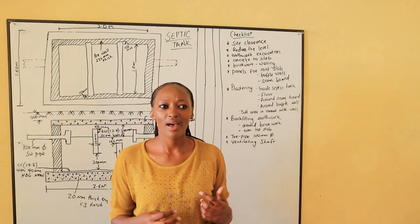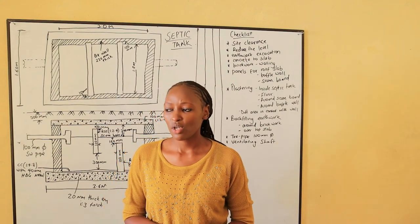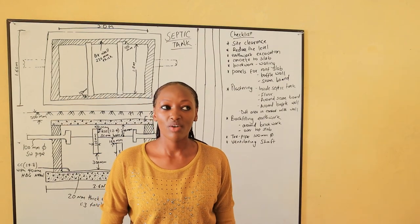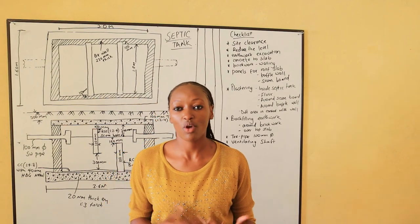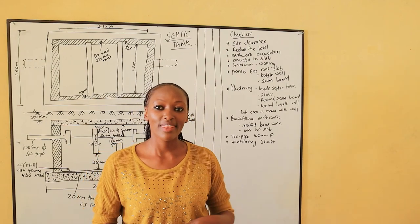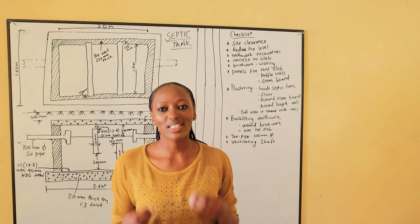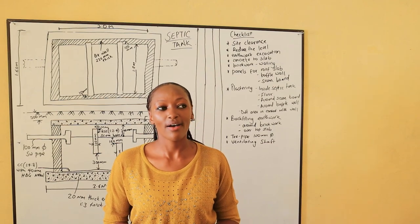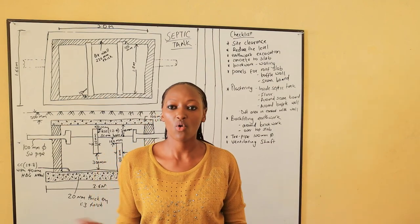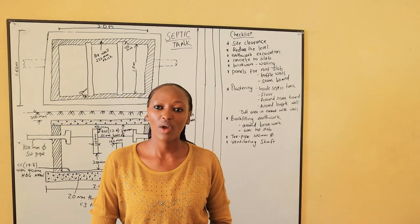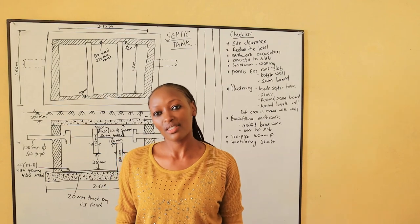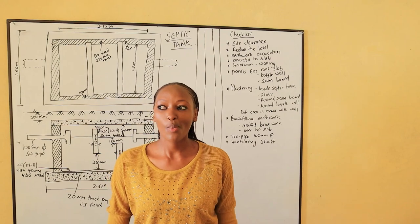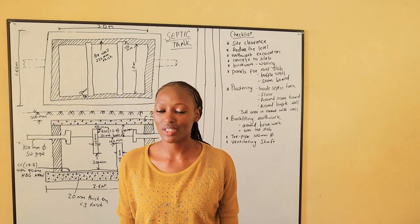Before giving the tender to a contractor, whenever we have tenders being given — this is where we want to know who is the contractor fit to do the construction — nowadays we give them a bill of quantities so that they can go and fill in their rates. We call it a bill of rates so that they can fill their rates, or they can also do taking off and fill in their rates and tell us how much they'll be doing the construction process for.